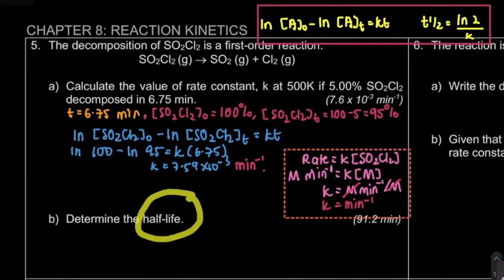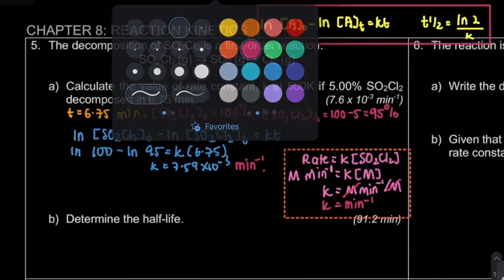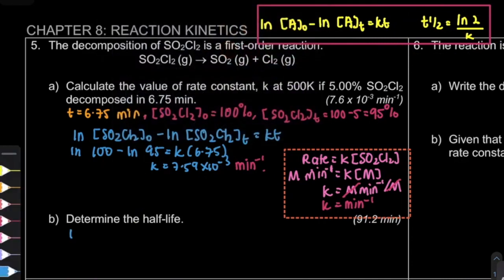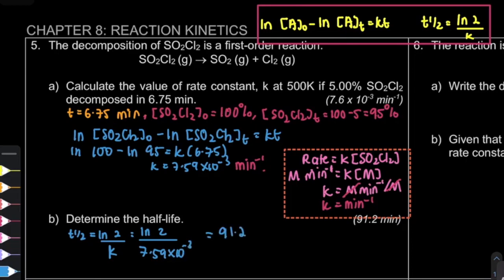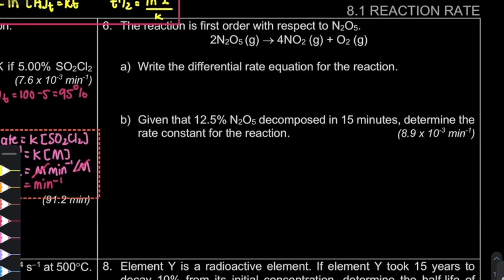For question B, to find the half-life of a first-order reaction, we use: half-life = ln 2 ÷ K. K was obtained from question A. We get the value, and the unit is in minutes because the unit of K is per minute.